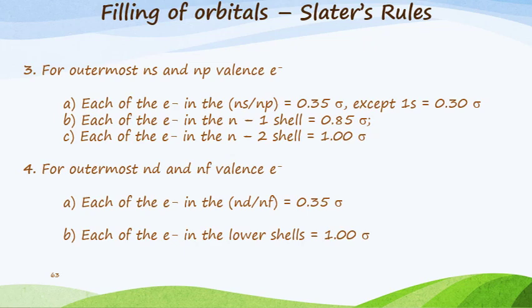Now what happens when we have nd and nf valence electrons? Each of the electrons in the (nd/nf) become 0.35σ, and then each of the electrons in the lower shells become 1.00σ.